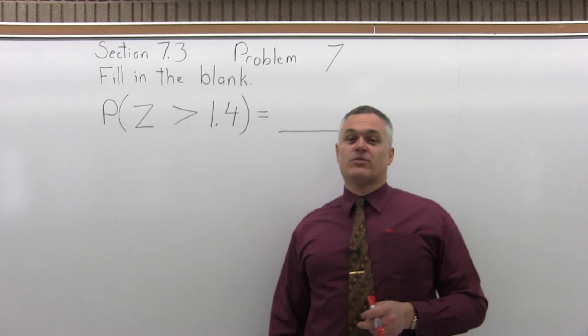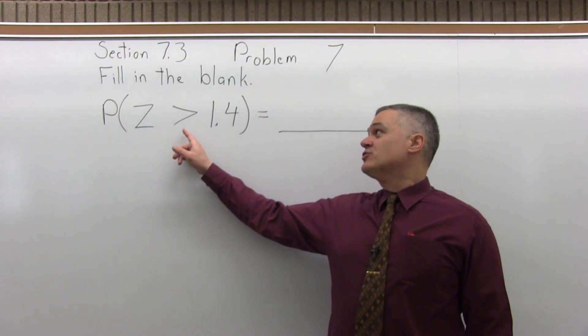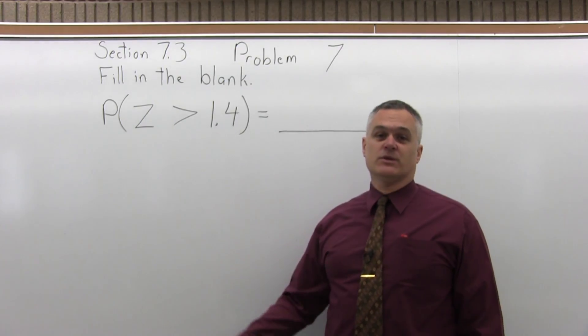This is Section 7.3, Problem number 7. It says fill in the blank, the probability that Z is greater than 1.4 equals blank.